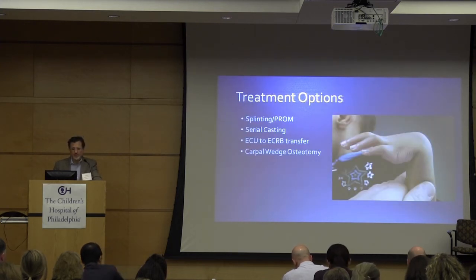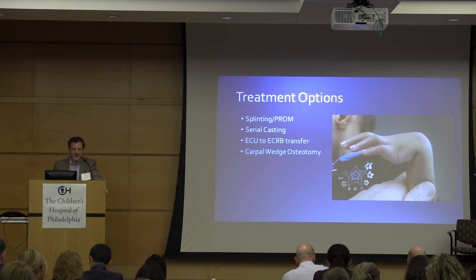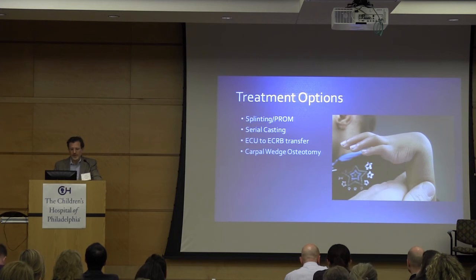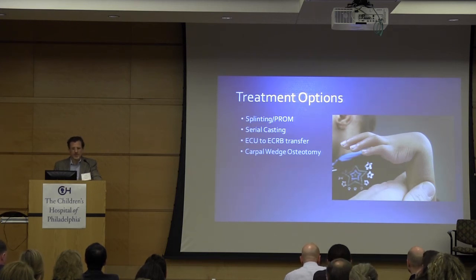Treatment options: splinting, passive range of motion, serial casting. ECU to ECRB transfers we commonly do for passively correctable flexion deformities. And then the carpal wedge osteotomy, which a lot of people in this room have written about — I think that's become the mainstay of treatment today.